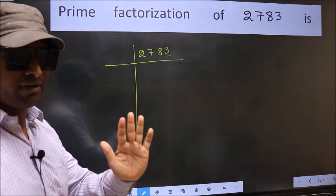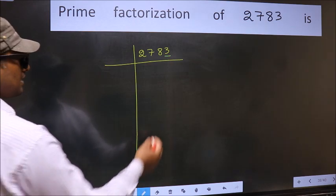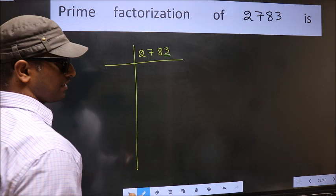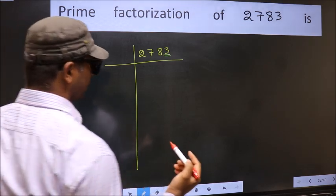Next prime number 5. The last digit is neither 0 nor 5. So this is not divisible by 5.